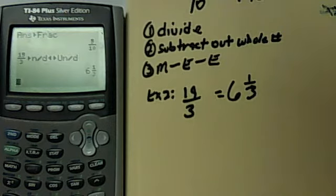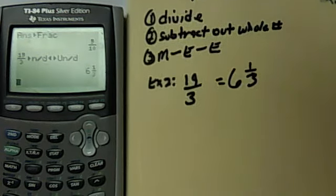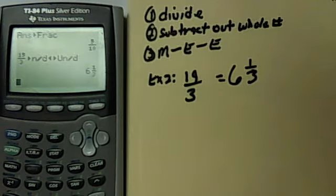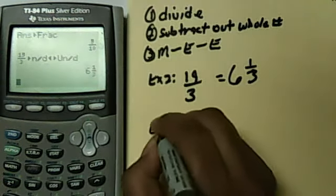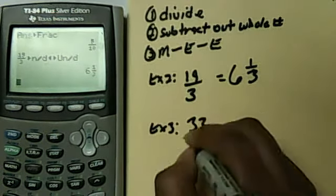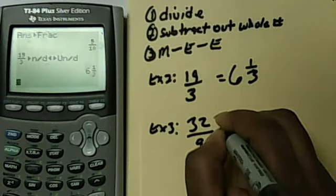Again, this is if you have the upgrade. If you don't have the fraction menu, then you do what we said before. Alright, so let's say if you had 32 over 9.